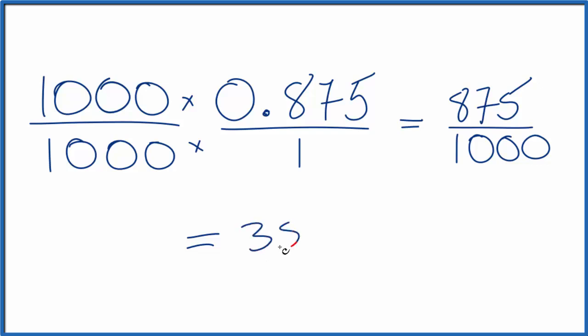At this point, we can reduce this down even further because 5 goes into 35 seven times, and 5 goes into 40 eight times. So we end up with the fraction 7/8.